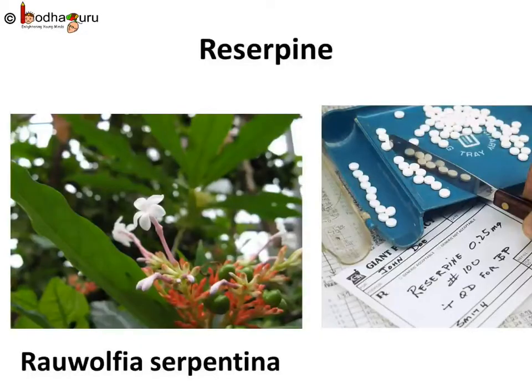Morphine is an excellent pain killer. Reserpine has been used to treat snake bite for centuries in ancient India. Even today, it is used for treating high blood pressure or hypertension. It is extracted from the roots of the Rauwolfia serpentina plant.